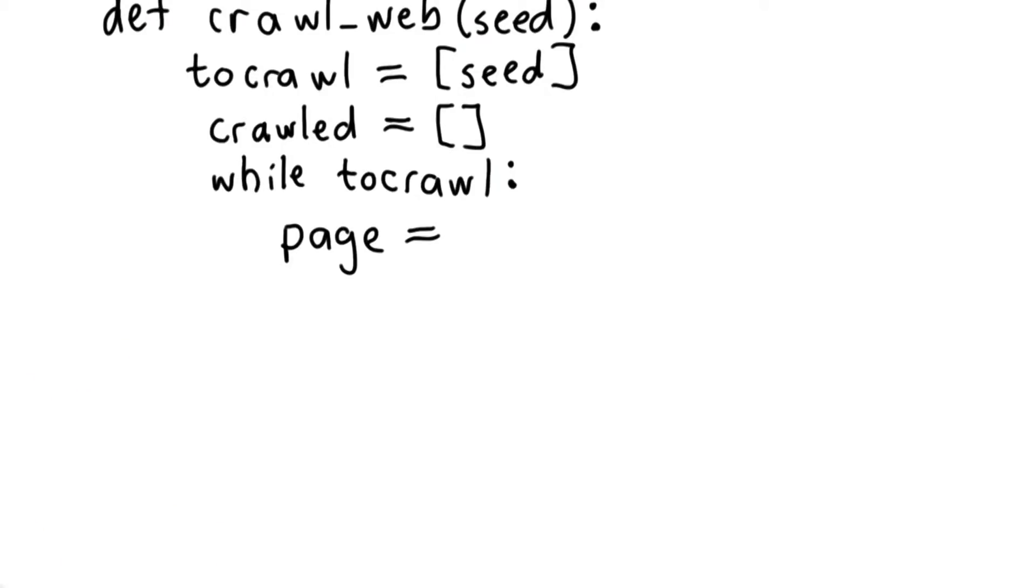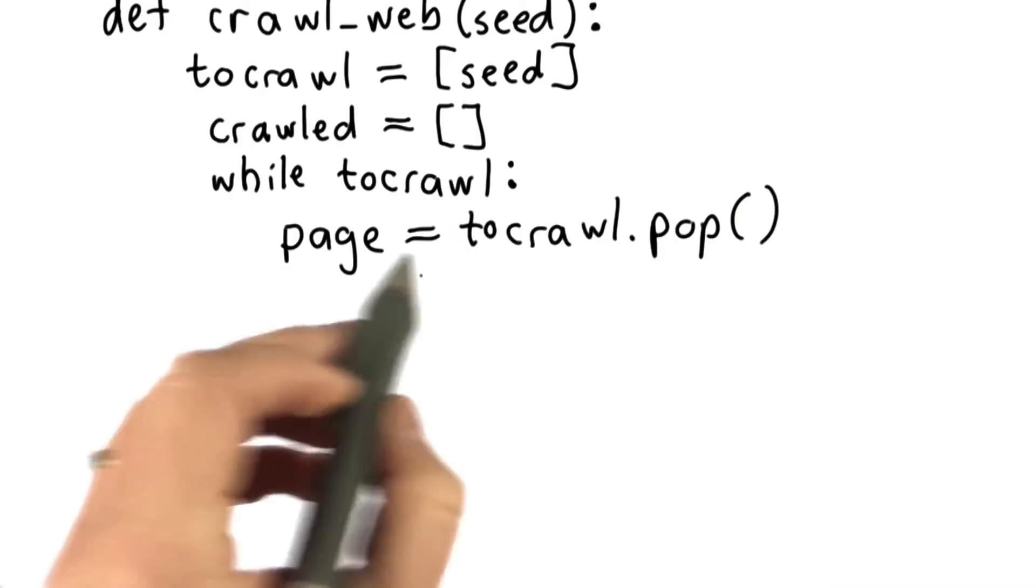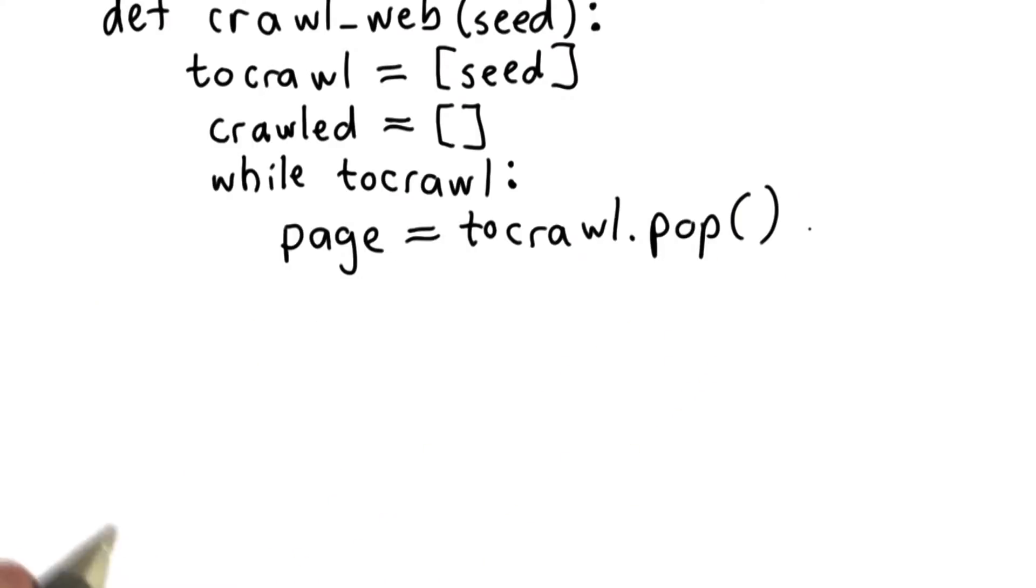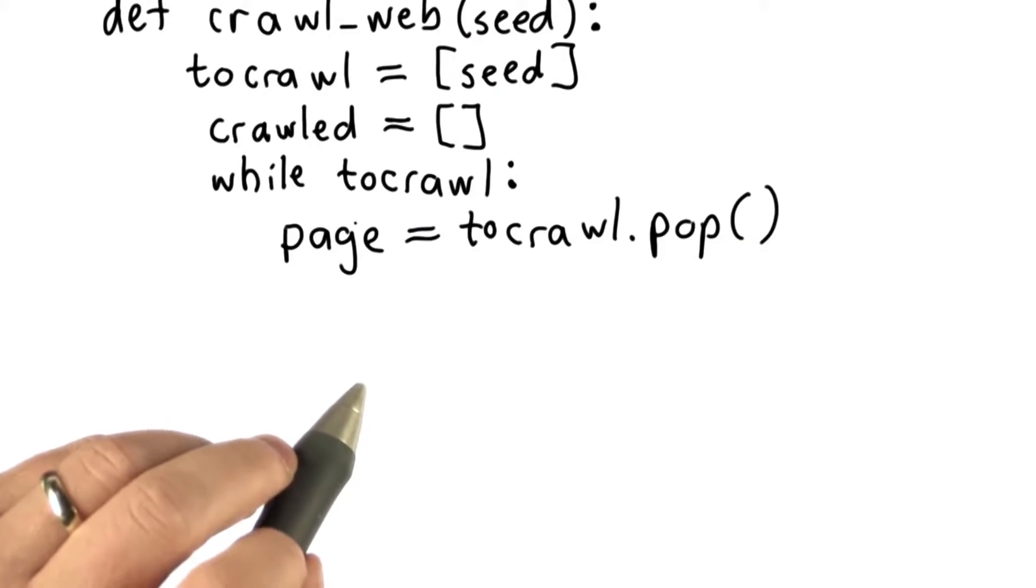So the best way to answer this is to use pop. Pop's the only thing we've seen that actually removes elements from a list, and it also has the property that it returns that element. If we do tocrawl.pop, that'll get us the last element in the tocrawl list, remove that element from the list tocrawl, and assign that to the variable page.